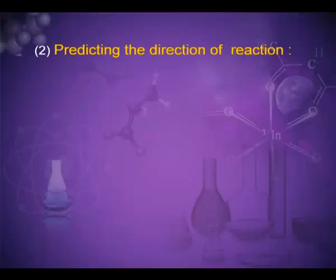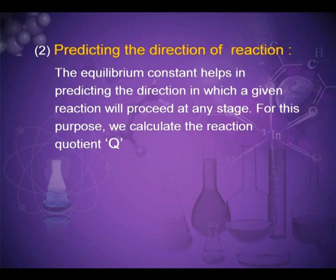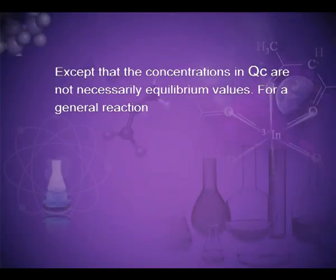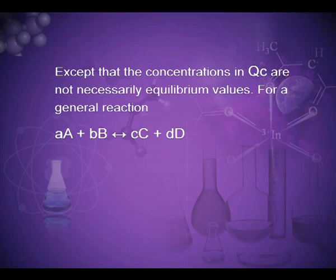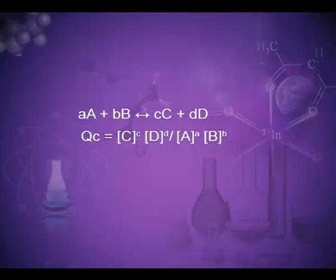The second application is predicting the direction of reaction. The equilibrium constant helps in predicting the direction in which a given reaction will proceed at any stage. For this purpose we calculate the reaction quotient Q. The reaction quotient Qc with molar concentration and Qp with partial pressure is defined in the same way as the equilibrium constant Kc, except that the concentrations in Qc are not necessarily equilibrium values. For a general reversible reaction aA + bB ⇌ cC + dD, Qc = [C]^c [D]^d / [A]^a [B]^b.